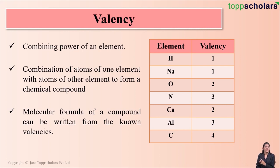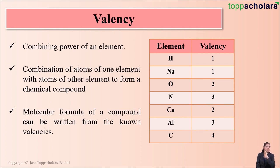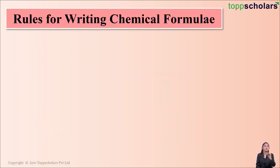So here we saw the symbols of some elements as well as their valency. Once we know the symbols and the valency of elements, we can write down the chemical formula of the compound. But before writing the chemical formula, we need to understand certain rules for writing chemical formulae.